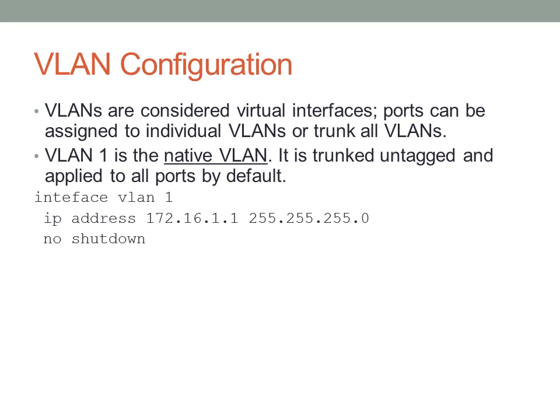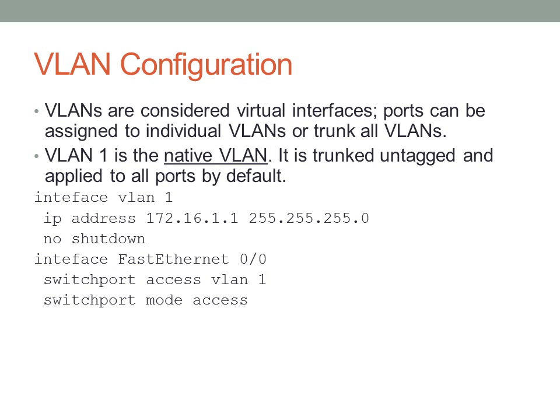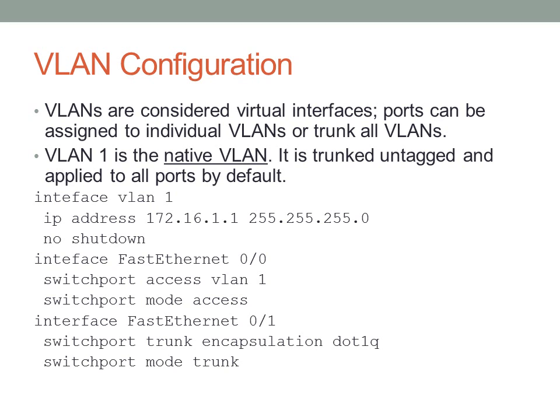Here's an example VLAN configuration. We apply an IP address and issue the 'no shutdown' command to bring the VLAN up, and we add fastethernet 0/0 to VLAN 1. Below that we have a trunk port configured with 802.1Q encapsulation. In newer switches you may not even have to specify the encapsulation type, because ISL encapsulation is actually legacy now.